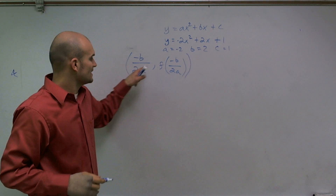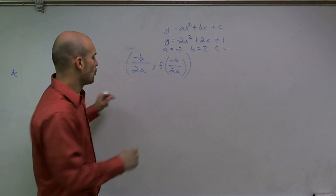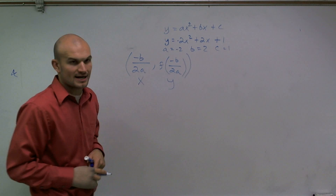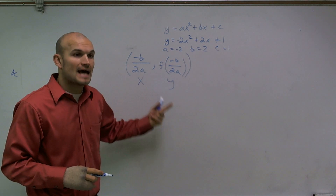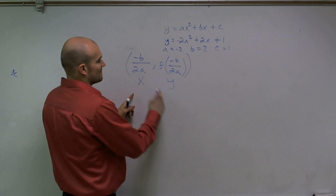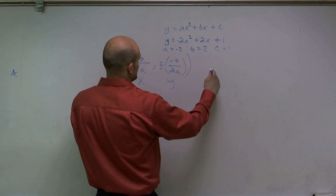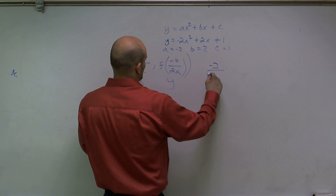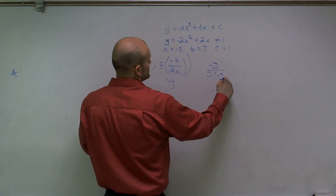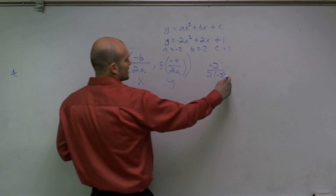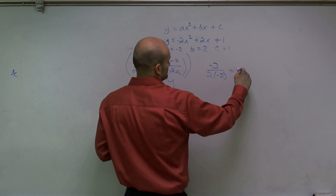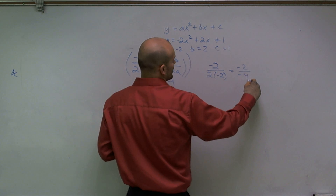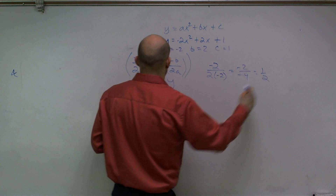So the first thing is, let's find our x-coordinate of our vertex. This is also what we call the axis of symmetry. To find this, I'm going to take opposite of b, which would be negative 2, all over 2 times a, which is negative 2. This becomes negative 2 over 2 times negative 2, which is negative 4, giving us 1 half.